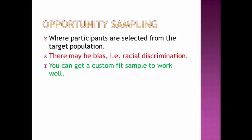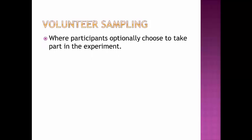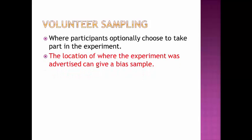And finally we have volunteer sampling where a participant optionally chooses to take part in the experiment. The negative to this is that the location of where the experiment was advertised can give a bias sample. For example, if you're conducting an experiment to see the effect of memory on people across the country and all your people come from London, or you're conducting some sort of experiment that really should vary across the nation and you only get a particular sample in one certain place, then of course it's going to be biased.